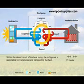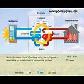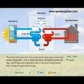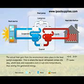Within the closed circuit of the heat pump, the refrigerant is responsible for transferring and transporting the heat. The actual heat gain from the environment takes place in the heat pump's evaporator. This is where the liquid refrigerant comes into play, which boils and evaporates even in sub-zero temperatures, thus storing the generated energy.